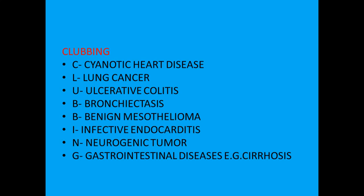Causes of clubbing — clubbing is a digital bulbous enlargement of the nail, diagnosed with the help of the Schamroth sign. The mnemonic is CLUBBING itself: C for cyanotic heart disease, L for lung cancer, U for ulcerative colitis, B for bronchitis, B for benign mesothelioma, I for infective endocarditis, N for neurogenic tumor, and G for gastrointestinal disease, for example cirrhosis.